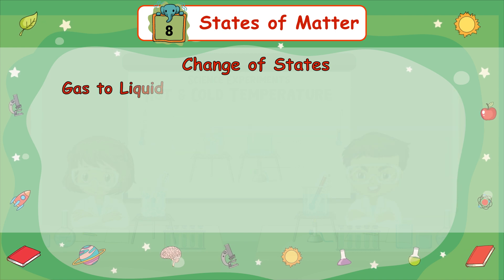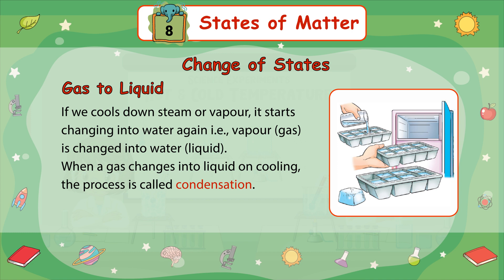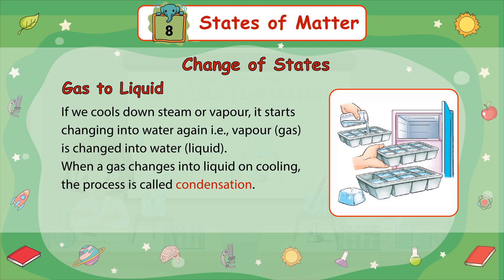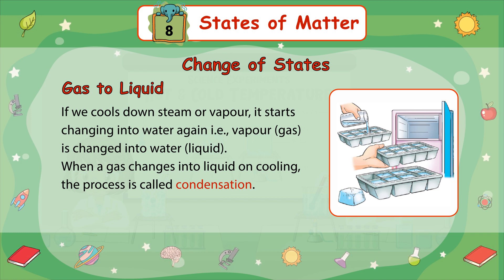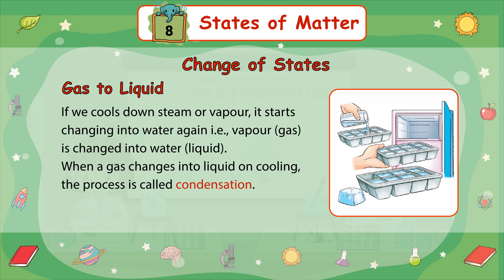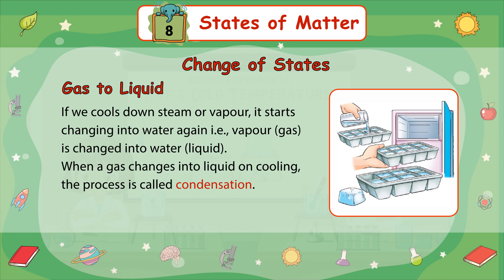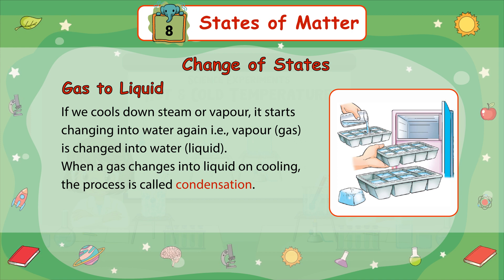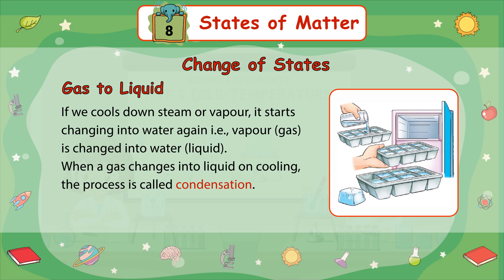Gas to Liquid: If we cool down steam or vapor, it starts changing into water again — that is, vapor (gas) is changed into water (liquid). When a gas changes into liquid on cooling, the process is called condensation.